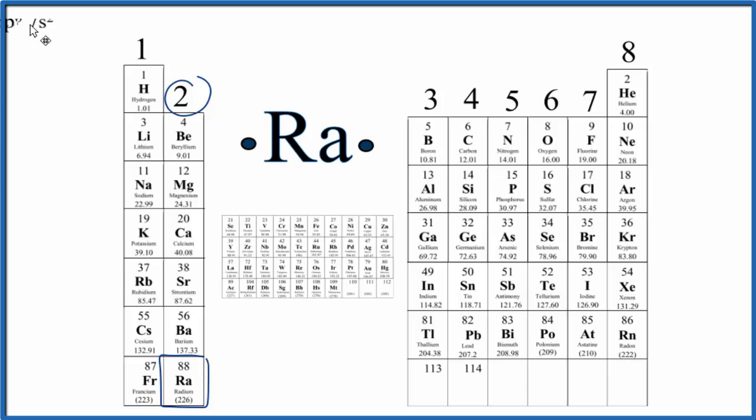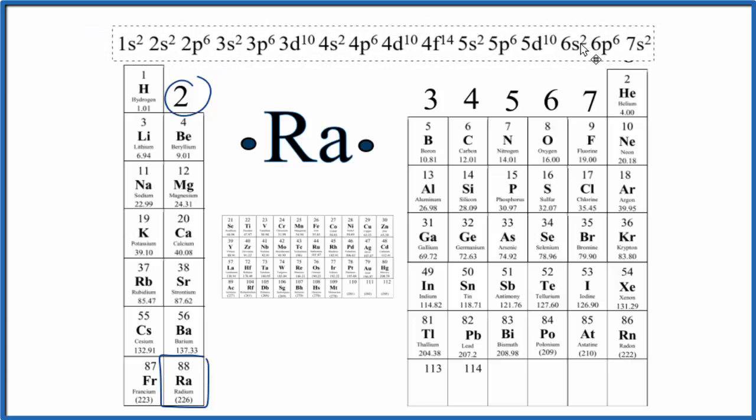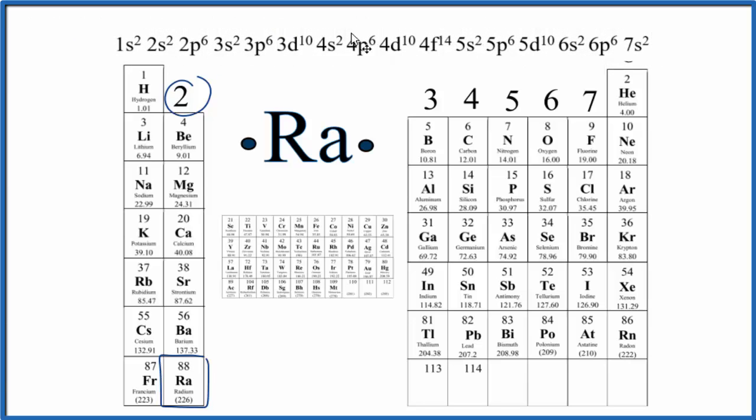We could also look at the electron configuration for radium, and that would help us understand the Lewis structure as well. If we look at the highest energy level, we go here, 7th energy level. This is our highest energy level. It has two valence electrons. So the Lewis structure for radium should have two valence electrons.